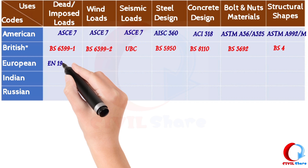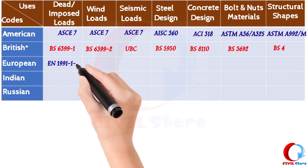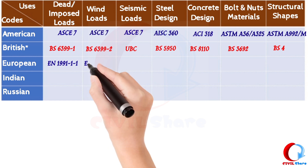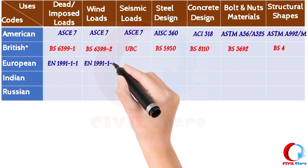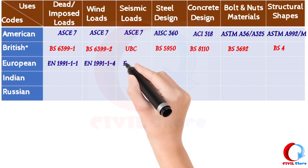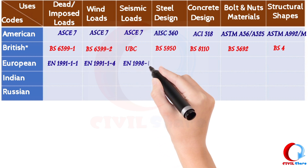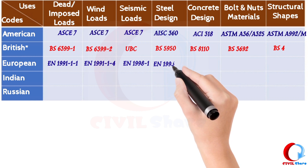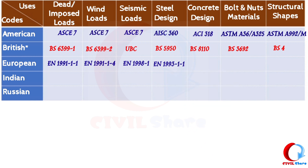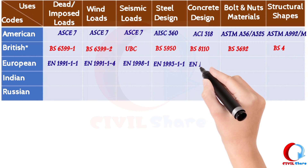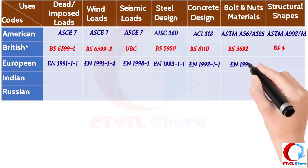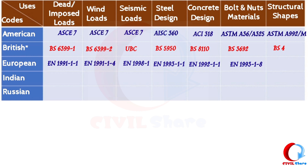Let's see European Codes and their uses. EN 1991-1 Part 1, 2002 is used for densities, self-weight, and imposed loads for buildings. EN 1991-1 Part 4, 2005 is used for wind actions. EN 1998-1, 2004 is used for earthquake resistance of buildings. EN 1993-1 Part 1, 2005 is used for design of steel structures. EN 1992-1 Part 1, 2004 is used for design of concrete structures.